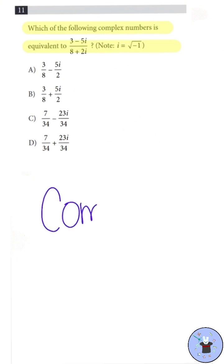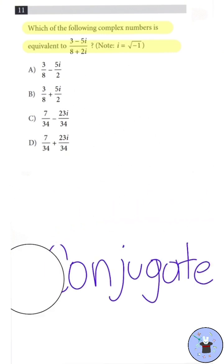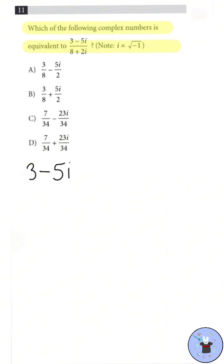We can do this by multiplying by the complex conjugate, which is just the opposite of the denominator. So, we have 3 minus 5i divided by 8 plus 2i times 8 minus 2i divided by 8 minus 2i. You are practically multiplying by 1, however you get rid of the imaginary number in the denominator.